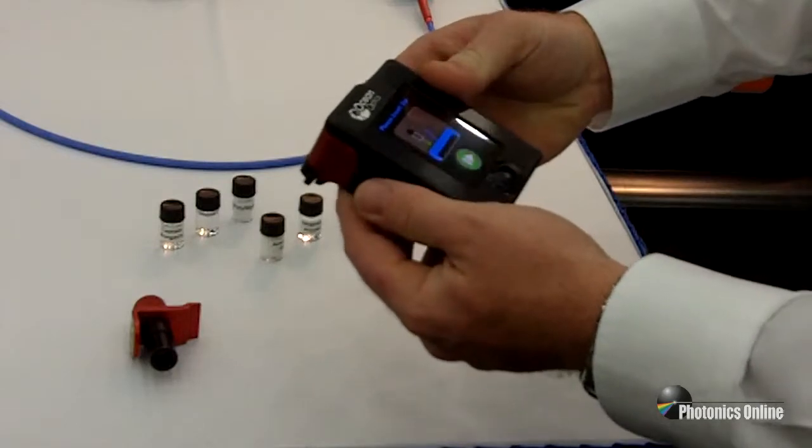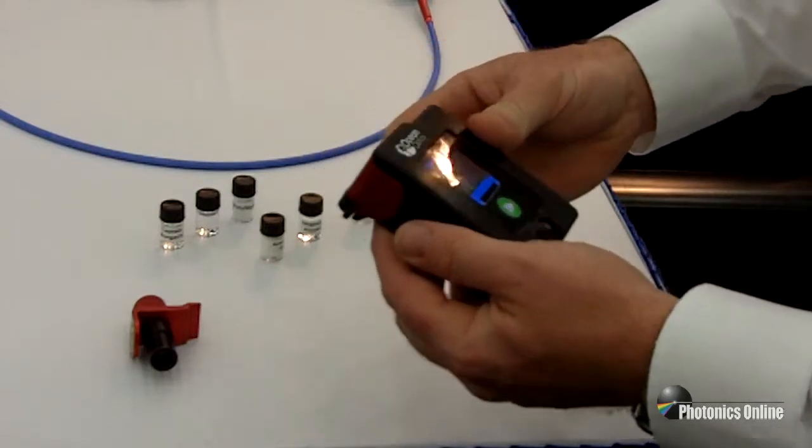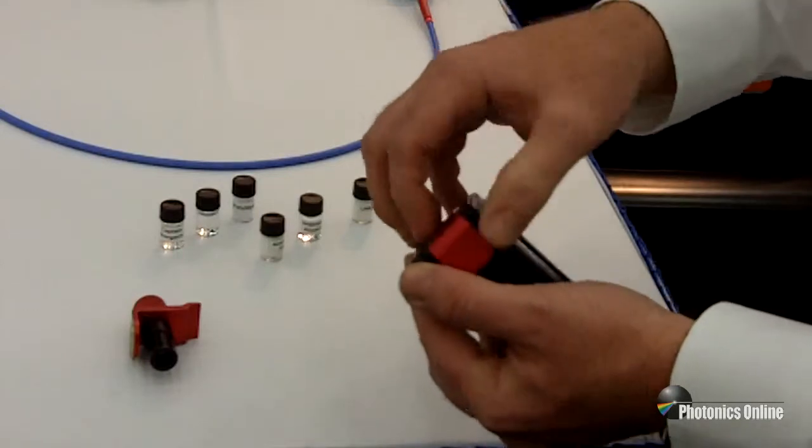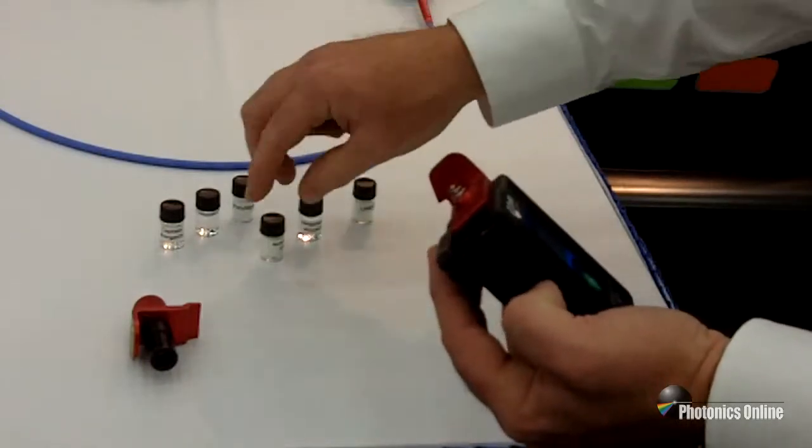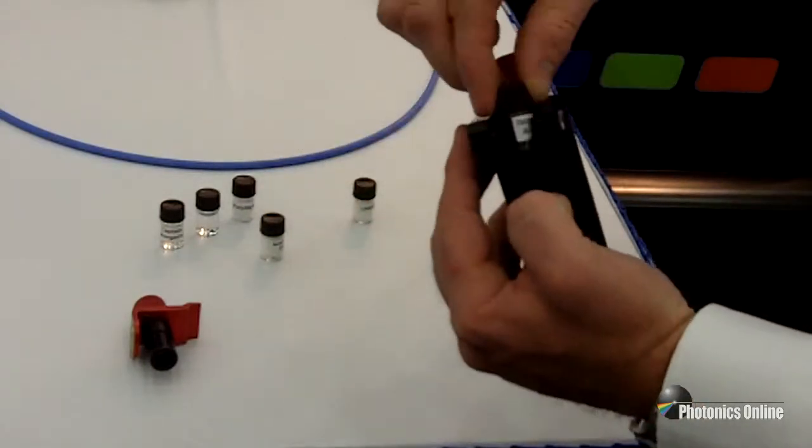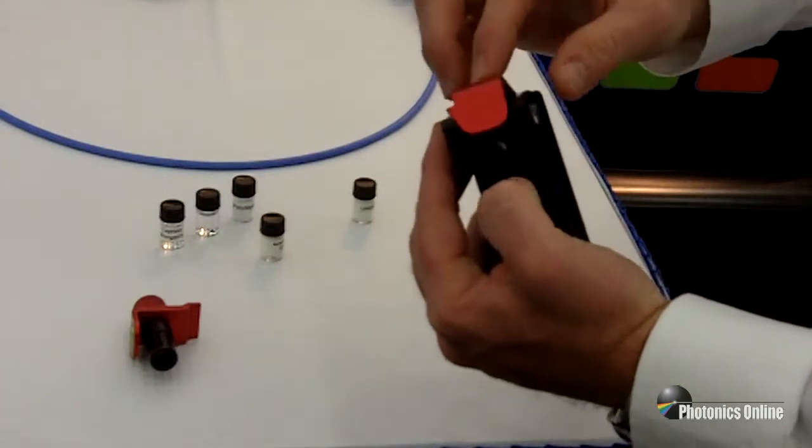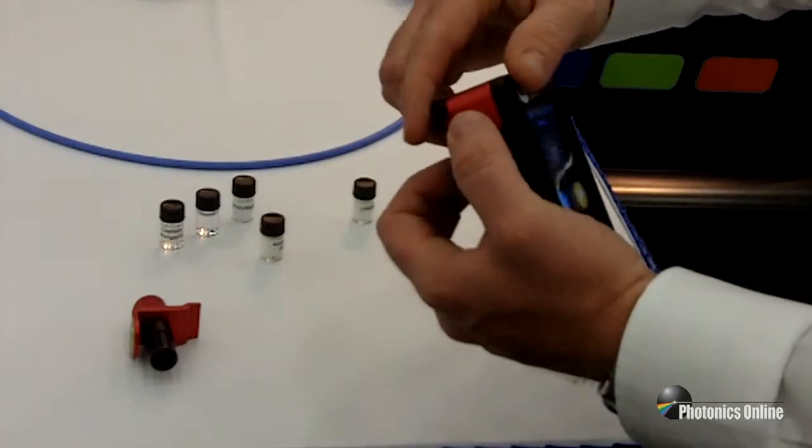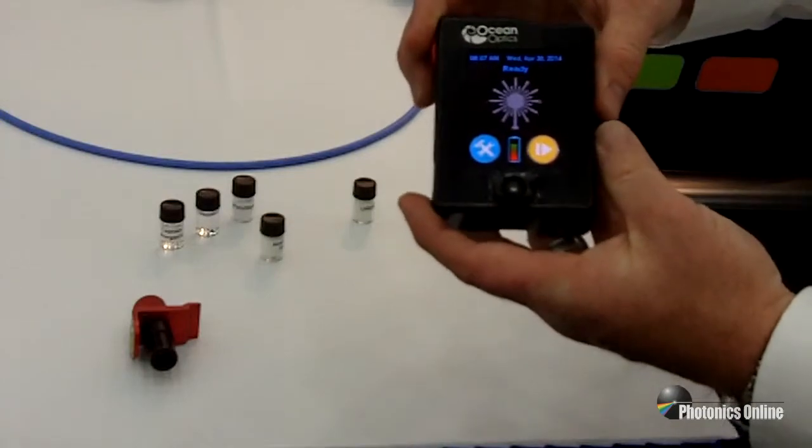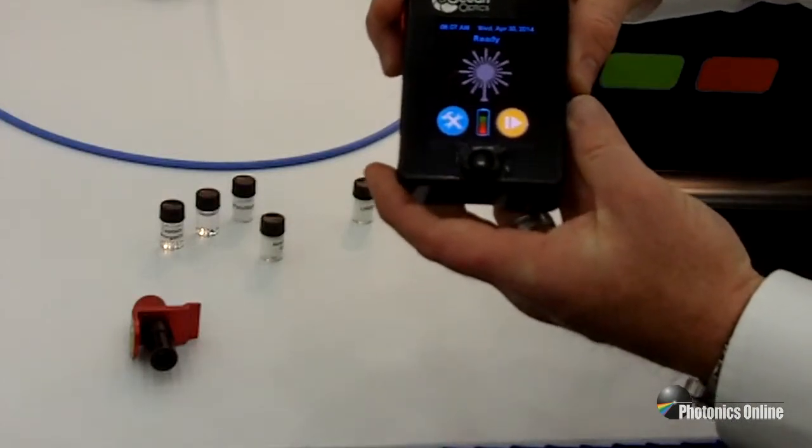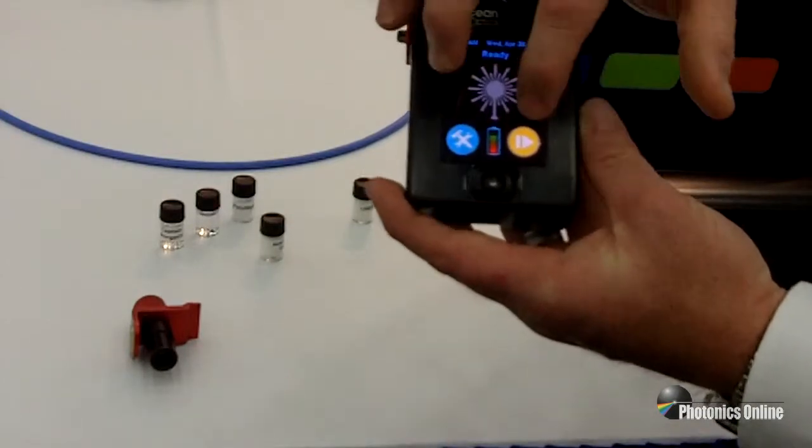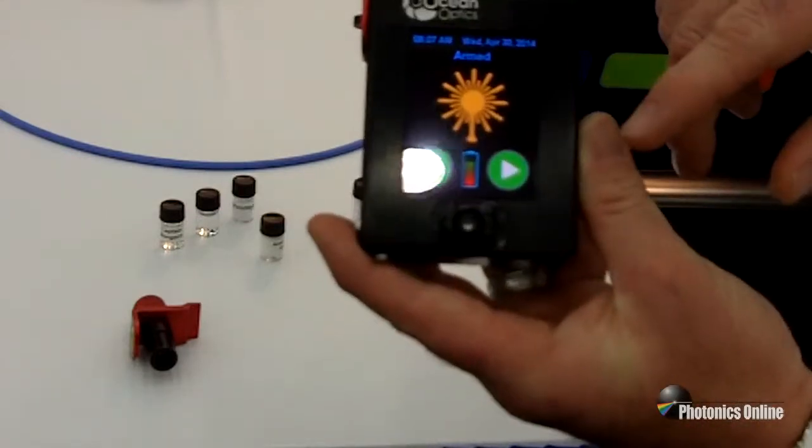Once the instrument is calibrated off an internal standard, you can then choose two sampling methods. You can either measure samples in vials by placing them inside of the instrument. And then there's just a few button presses necessary on the touch screen in order to actually make a measurement. So I'll do that.